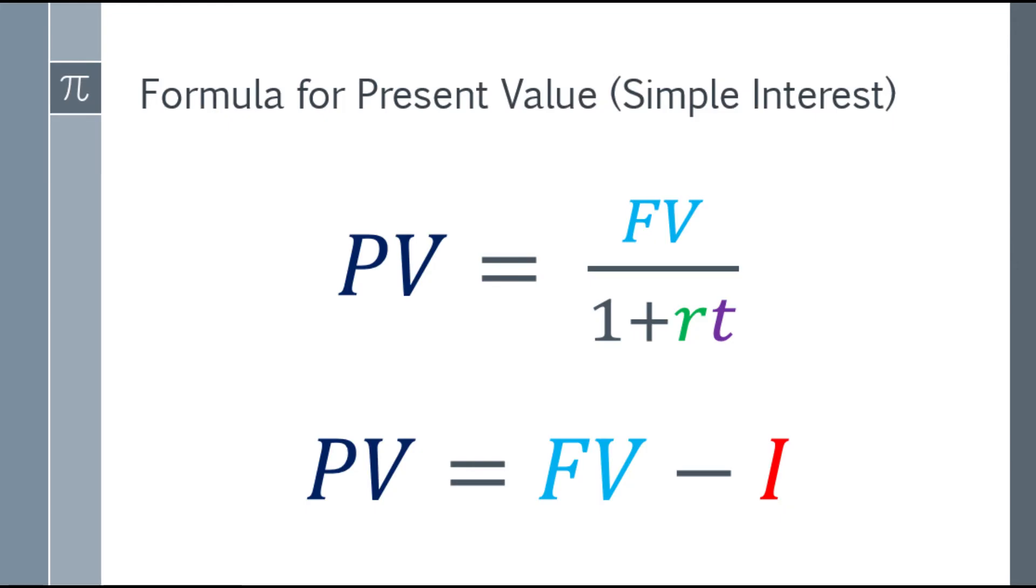So moving on, let's go to the formula for the present value in simple interest. PV is equal to FV, future value, over the quantity 1 plus RT, or rate times time. Or, present value is equal to the future value minus the interest amount.